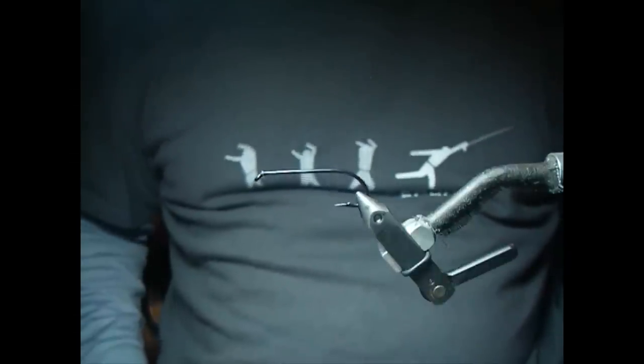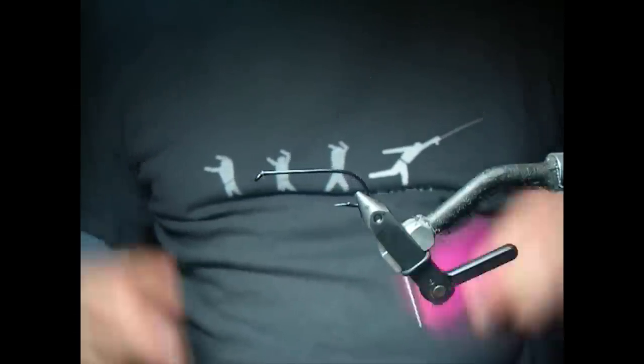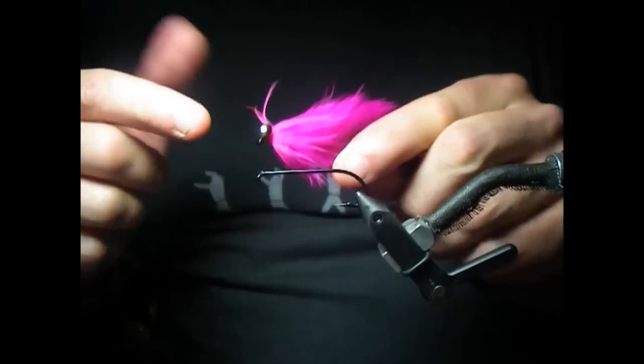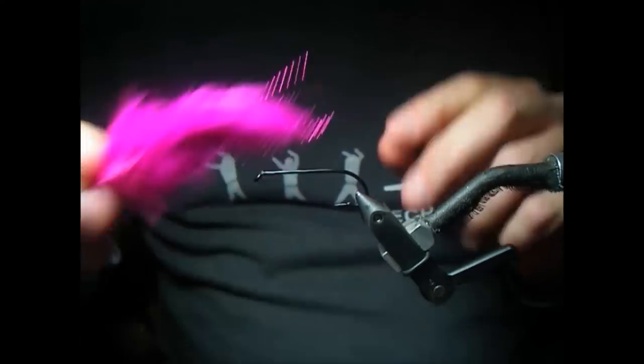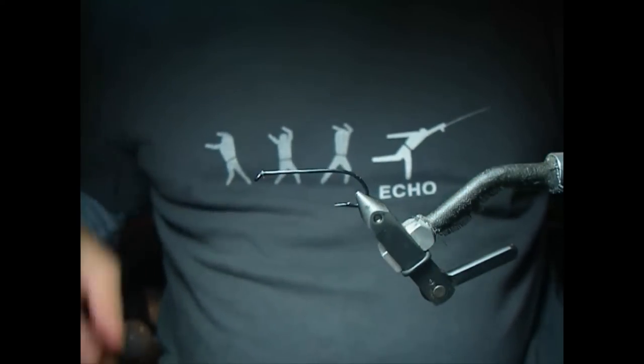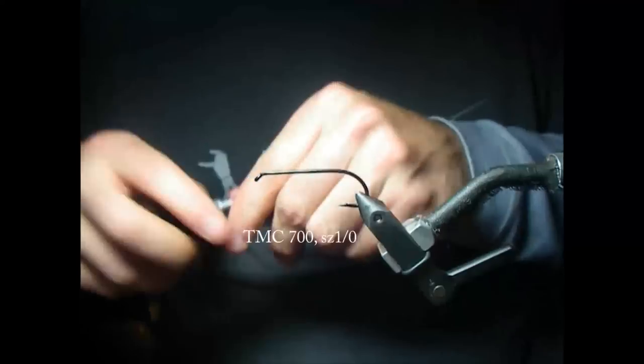Hey there, welcome to the AlaskaFlyFishingGoods.com online fly tying tutorial. Today we're going to show you how to tie the hairball leech, salmon killer extraordinaire. Great pattern developed by John Rupp in the 90s. We start now with our hook in the vise here.